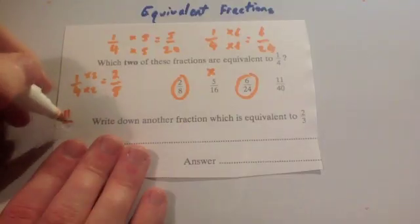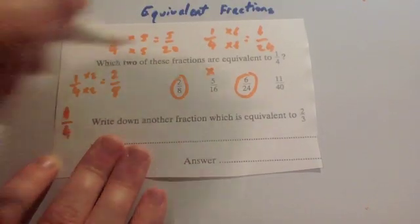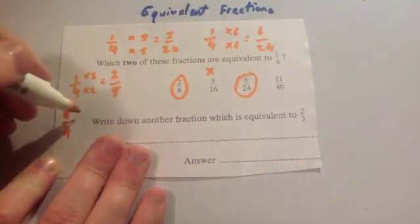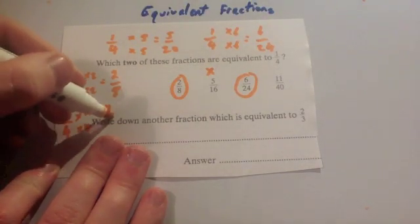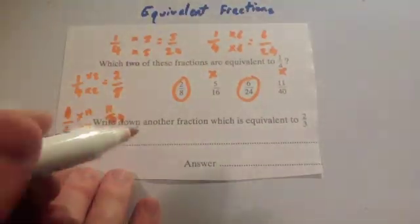But if you wanted to have a look at 11, if you had a quarter to get to 11 on the top line you need to times by 11, and times by 11 that would be 11 over 44, so that wouldn't work. The next part.